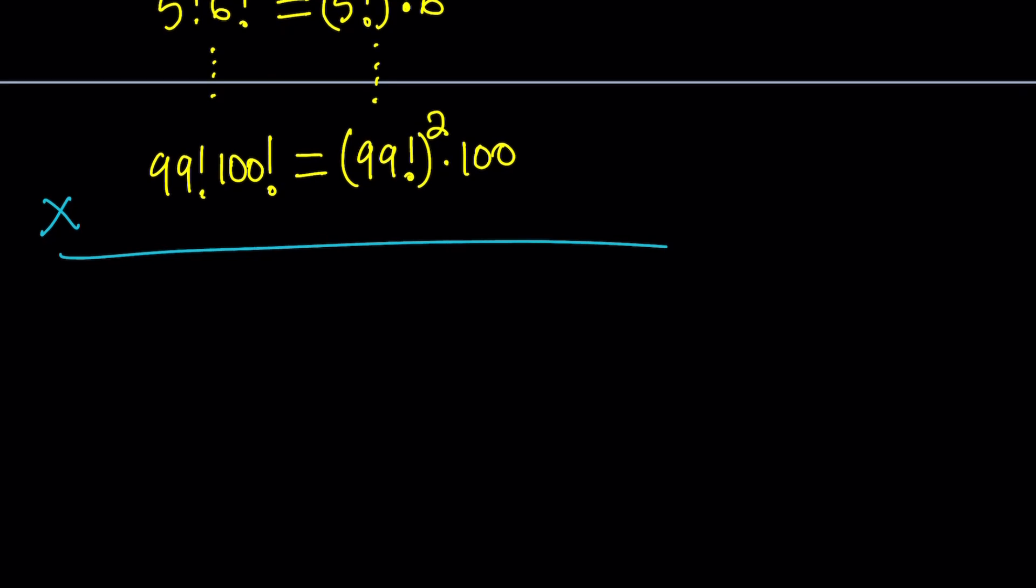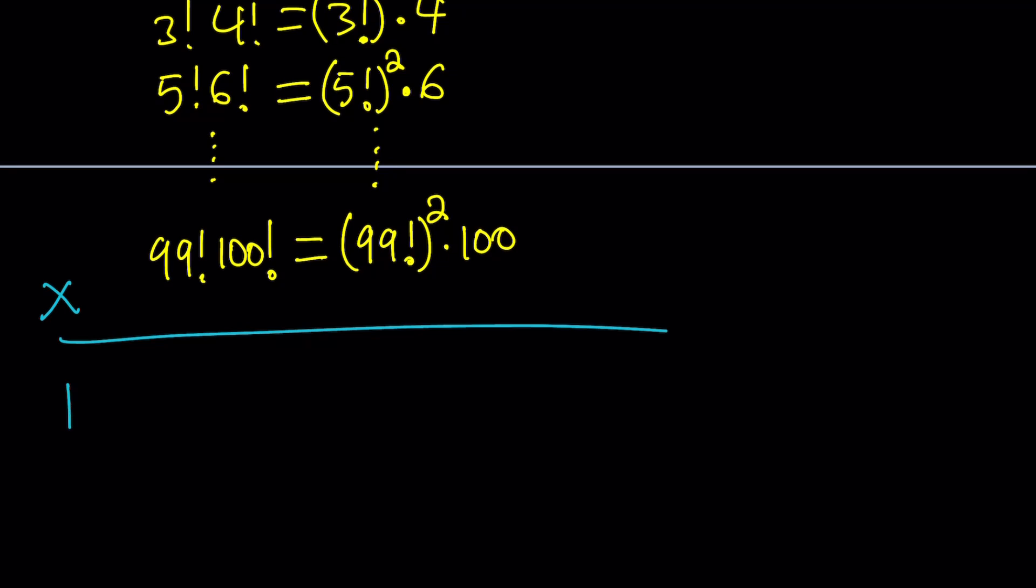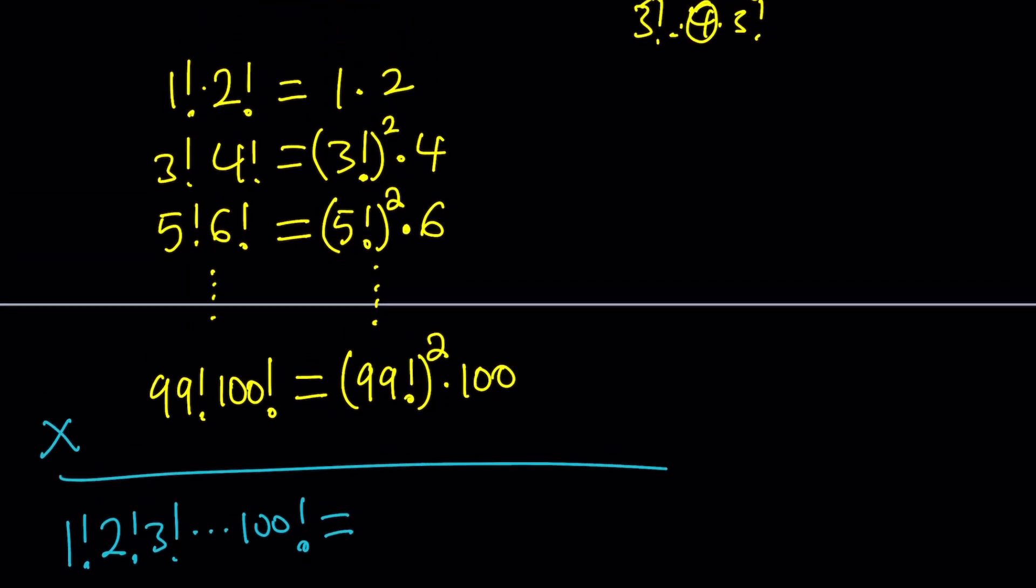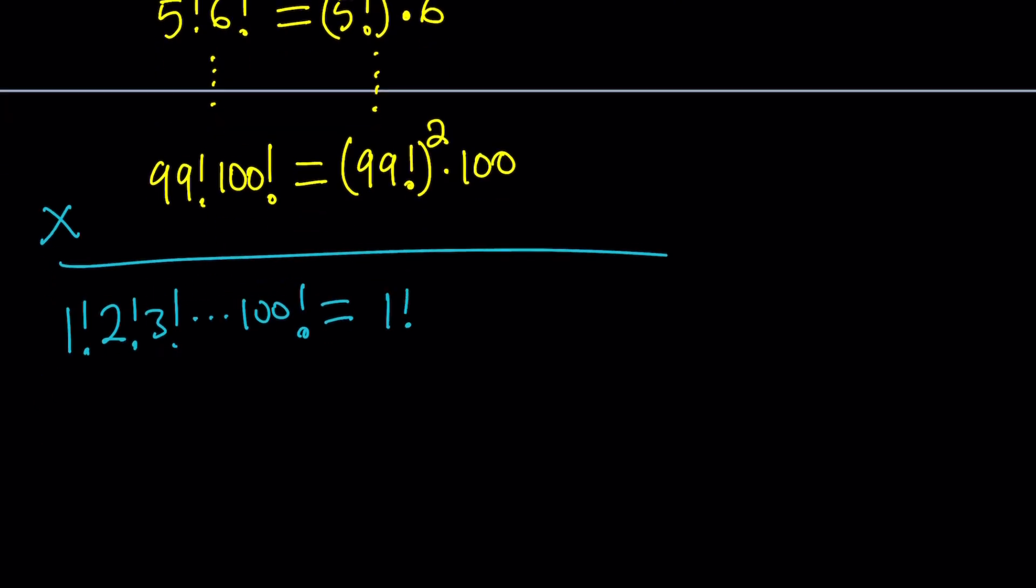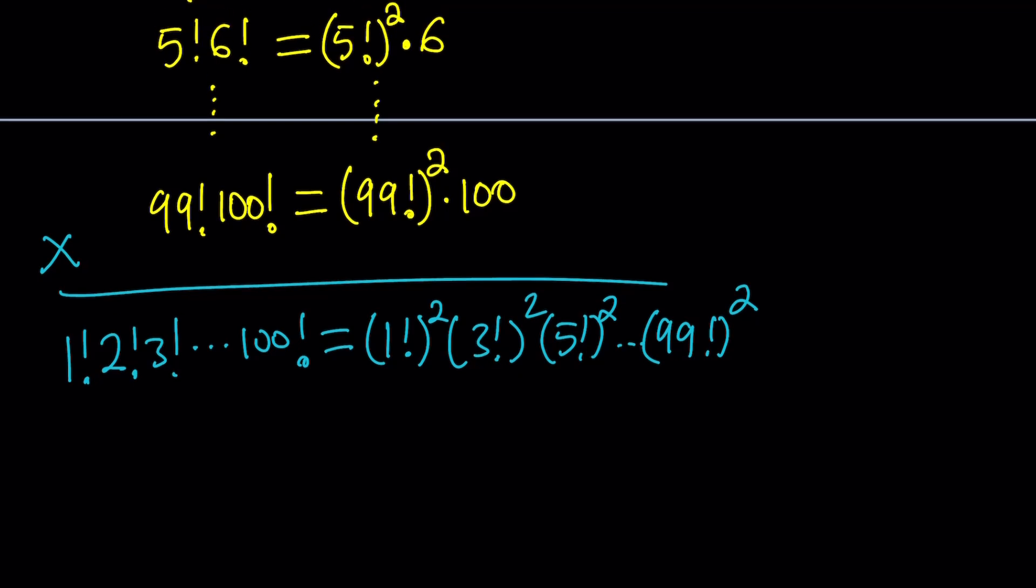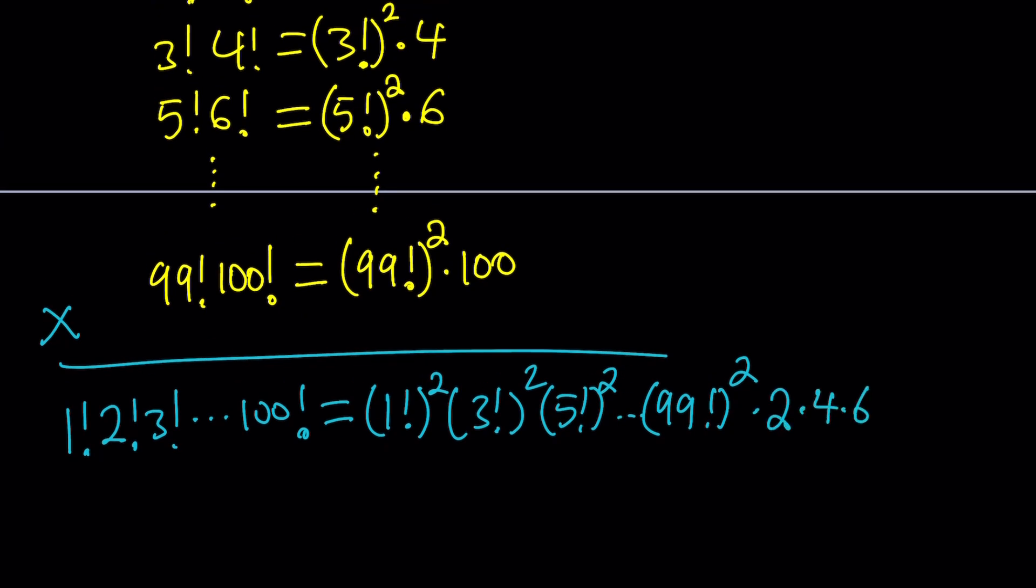The left-hand side is going to be 1 factorial times 2 factorial times 3 factorial all the way up to 100 factorial, which is my numerator. And that is going to equal the right-hand side. If you wanted to follow the exact same pattern, you could also write this as 1 factorial squared times 3 factorial squared times 5 factorial squared all the way up to 99 factorial squared. Those are all odd factorial squared, notice that, and then a bunch of even numbers, which is times 2, times 4, times 6, all the way up to 100.